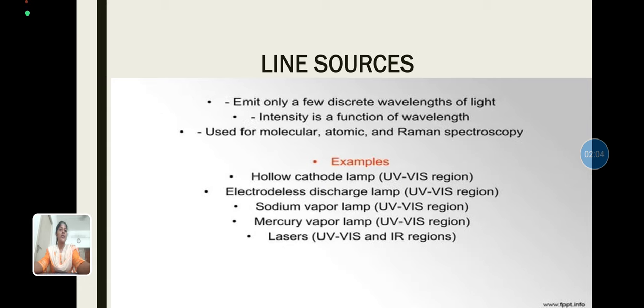Next, line sources. Line sources emit only a few discrete wavelengths of light. The intensity is a function of wavelength and they are used for molecular, atomic, and Raman spectroscopy. Examples of line sources include hollow cathode lamp, electrodeless discharge lamp, mercury vapor lamp, and lasers of UV and IR regions.